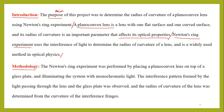Then methodology — how we will perform the experiment. The Newton's ring experiment was performed by placing a plano-convex lens on top of a glass plate and illuminating the system with monochromatic light. The interference pattern formed by the light passing through the lens and glass plate was observed, and the radius of curvature of the lens was determined from the curvature of the interference fringes. The total procedure is summarized in three to four lines.